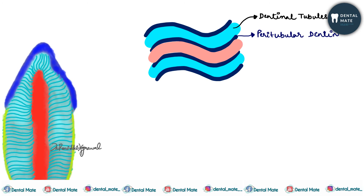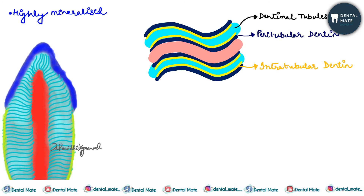The type of dentine that immediately surrounds the dentinal tubule is peritubular dentine. The deposition of mineral on the inner tubule wall is known as intratubular dentine. Peritubular dentine is highly mineralized — 9 percent more mineralized than the intertubular dentine.